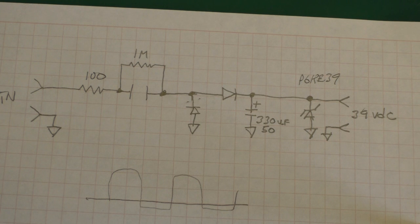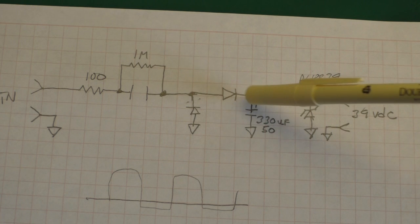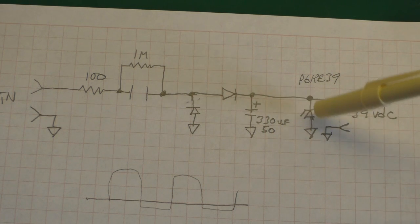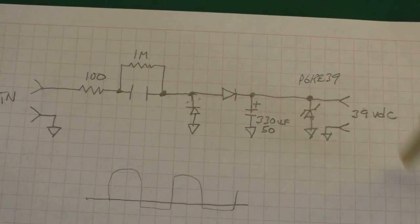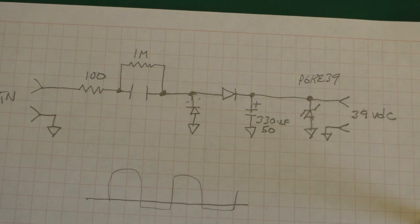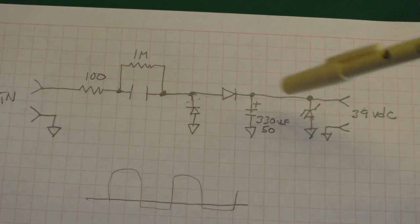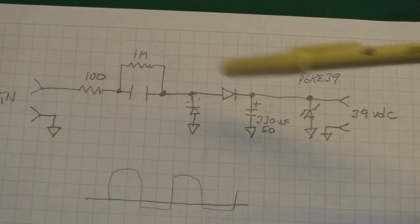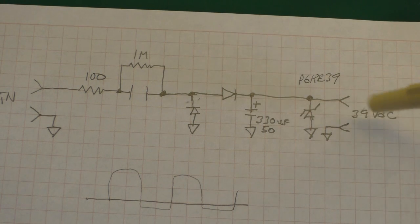When this voltage gets up to 39 volts, this will start conducting making sure that this circuit remains at 39 volts, doesn't go above it. If that wasn't there this can actually go pretty high, this can get to 70, 80 volts, especially when you've got 120 volts over there. That is basically what that is.